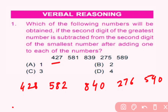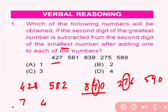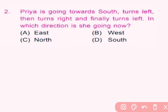Now, the second digit of the greatest number: the greatest number is 840 and its second digit is 4. The second digit of the smallest number: the smallest number is 276 and its second digit is 7. The question asks for the second digit of the greatest number subtracted from the second digit of the smallest number: 7−4=3. So here, C is the correct answer.